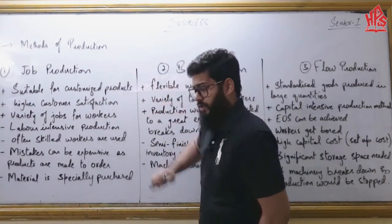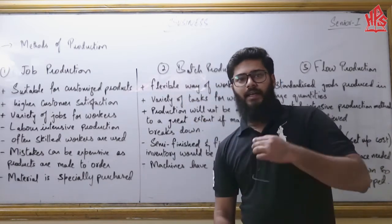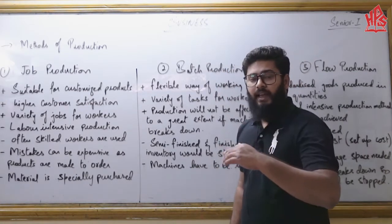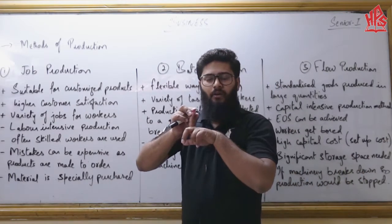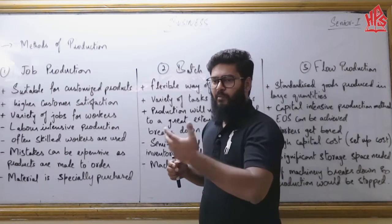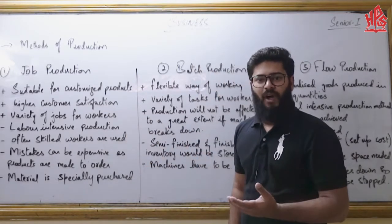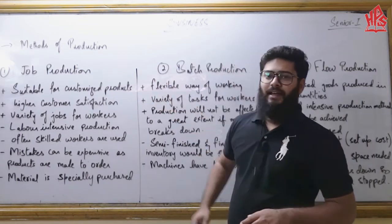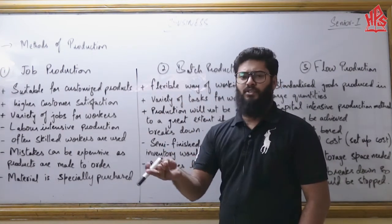First, we have job production. Job production is where a single product is made at a time — meaning we are dealing with one customer at a time. Since we are dealing with one customer at a time, the level of customization is very high. In job production, we usually produce customized goods, which can also be referred to as personalized or specialized goods.